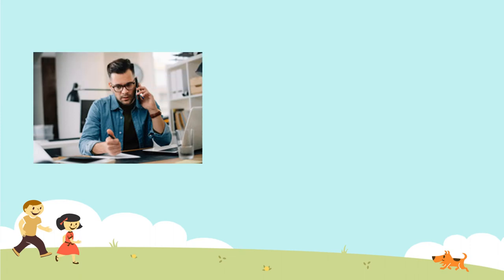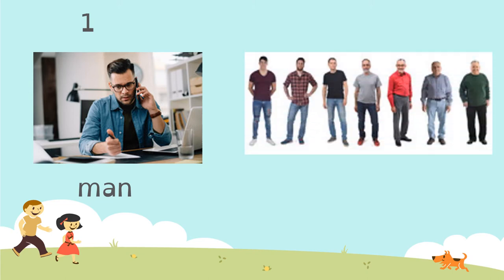The first one, look at this picture. This is a man. So we have one man — it's singular. And the plural is men. So in this case we have one, two, three, four, five, six, seven men. A man or one man, and seven men.